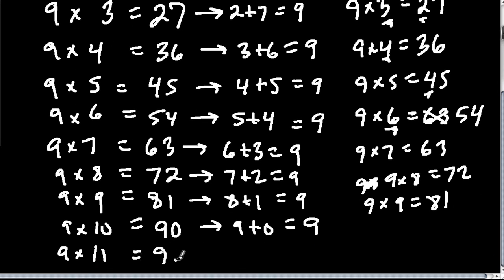Well, 9 times 11 is 99. And then if we take these two digits, 9 plus 9, we get 18. And then if we take 18, we take 1 plus 8, we still get 9. In fact, a really cool thing about 9 is that it doesn't matter if it's a 2 or 3 digit number.